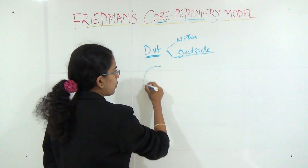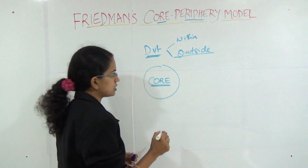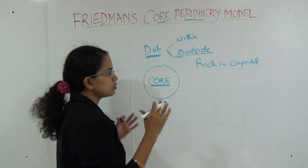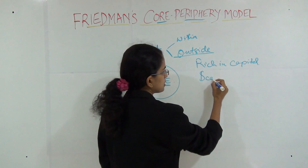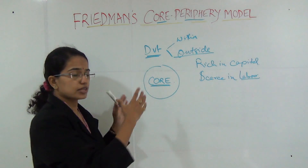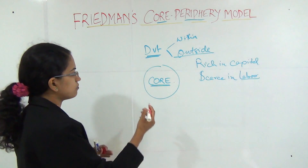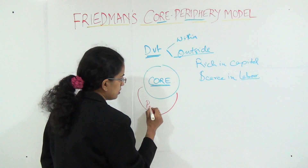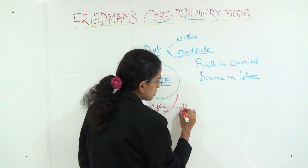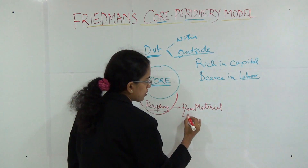As the term suggests, the core is the main centre. According to Friedman, the core was a region that was capital-rich but scarce in labour. So what is happening in the core is there is a lot of capital, a lot of money to invest, a lot of projects that can come up, but there is scarcity of labour. The periphery, on the other hand, has a huge amount of raw material and labour.